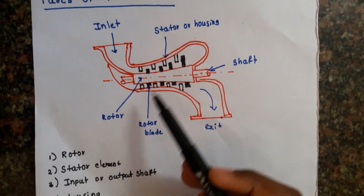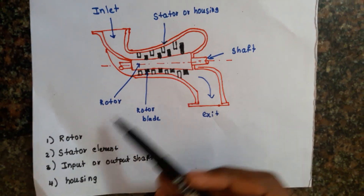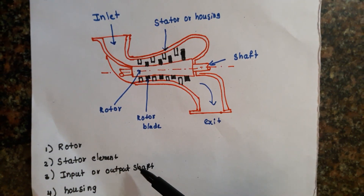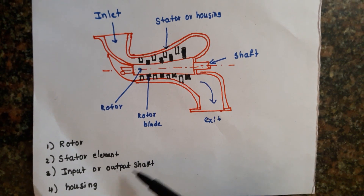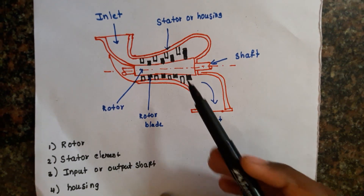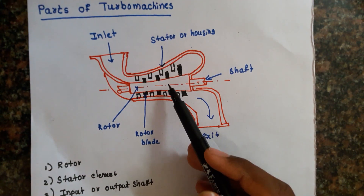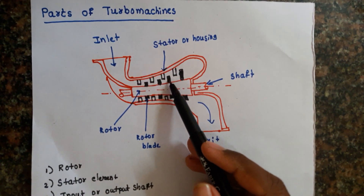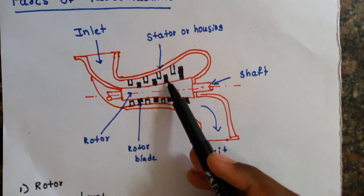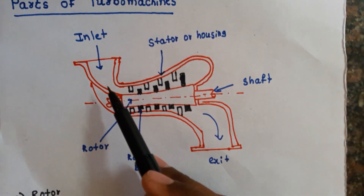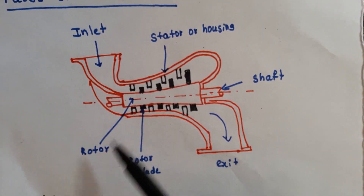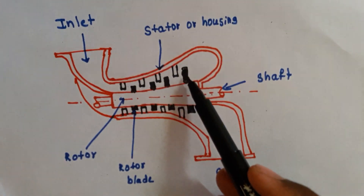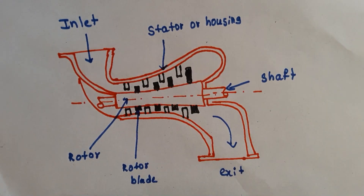The four main parts of a turbomachine are: rotor, stator element, input or output shaft, and housing. The rotor consists of rotor vanes as shown in the figure. The energy exchange takes place between rotor vanes and the fluid.